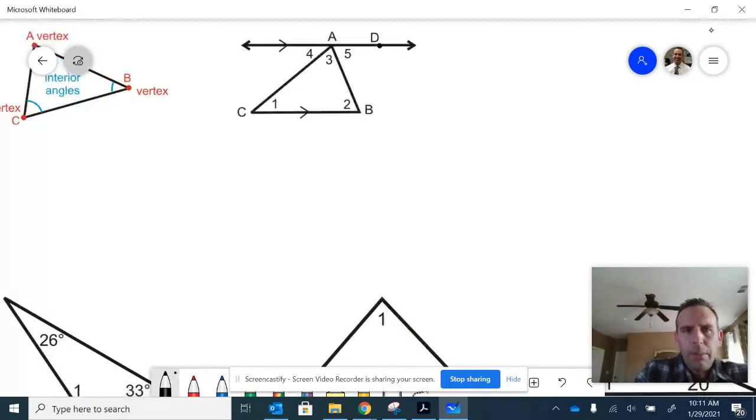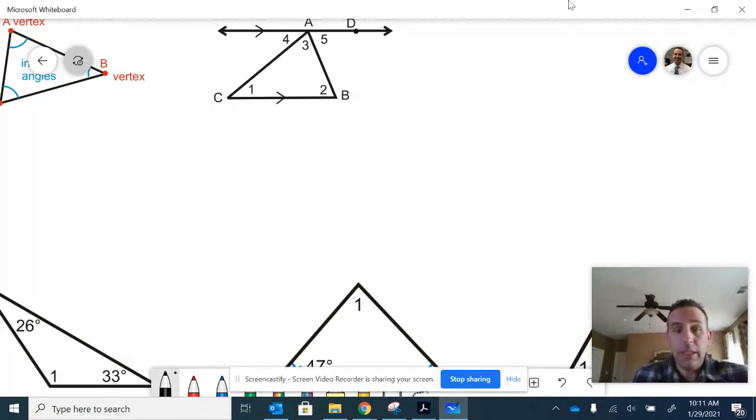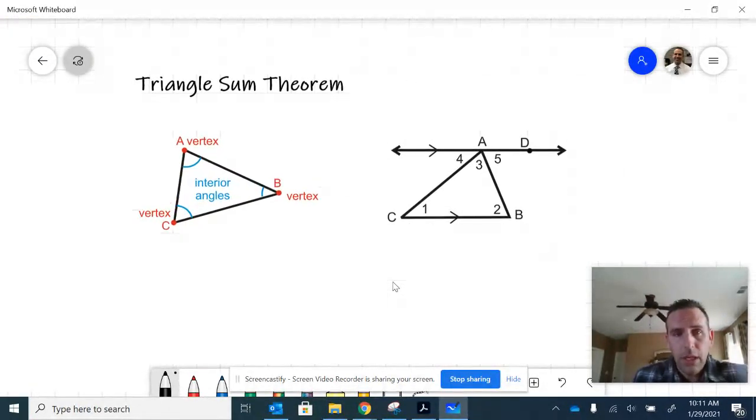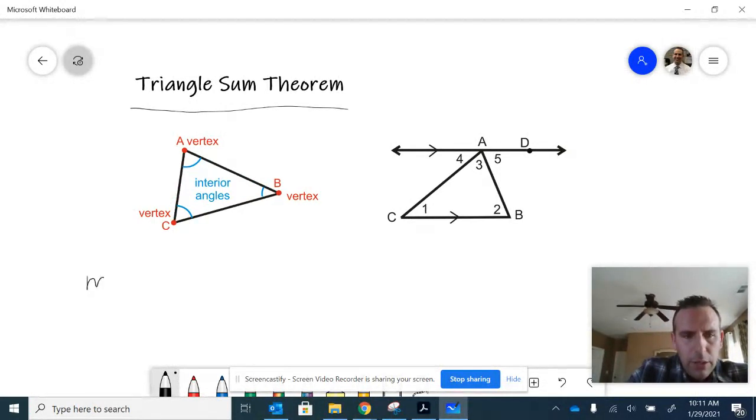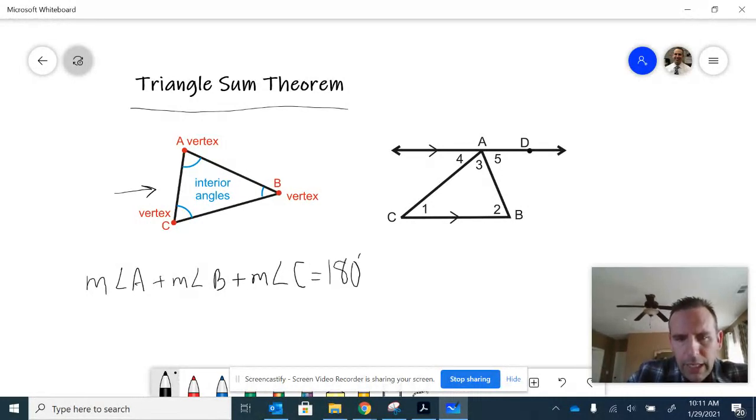The triangle sum theorem lets us know that the measure of the angles in this diagram, measure of angle A plus the measure of angle B plus the measure of angle C, all of the interior angles, will always be equal to 180 in a triangle.